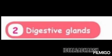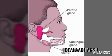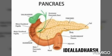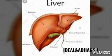First, the salivary glands. There are three salivary glands: parotid, sublingual, and submandibular. Salivary glands secrete saliva, which moistens the food. Next, the pancreas — it produces pancreatic juice, which contains digestive enzymes that help digest fats, proteins, and carbohydrates. Finally, the liver — the liver produces bile for the digestion of food.